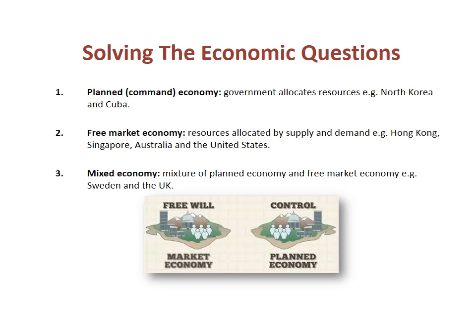Now we get to the age-old debate in economics: how do we solve these economic problems — what to produce, how to produce, and for whom? Typically we have three types of economies. The first is the planned economy, which I'll highlight in red.